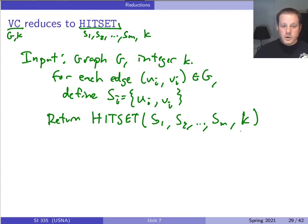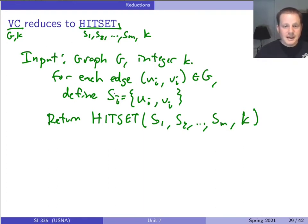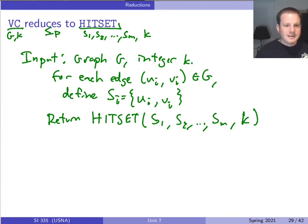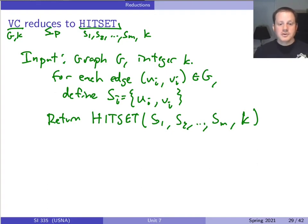We couldn't do this reduction as easily in the other direction, because in hitting set the sets don't have to be just size two. If we restrict to size-two sets they're the same problem, but in general hitting set can solve more things. So what we're saying is that vertex cover ≤_p hitting set — hitting set is potentially more difficult, and anything used to solve hitting set could also be used to solve vertex cover.